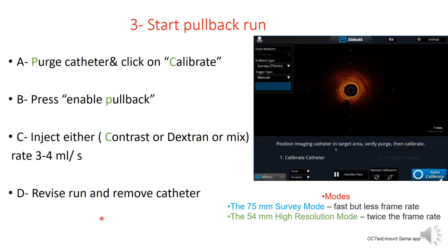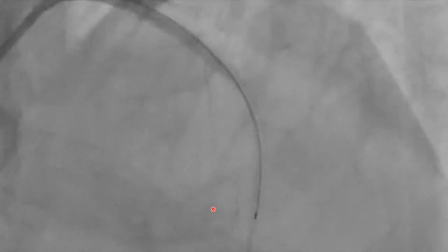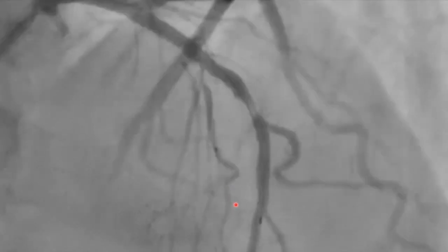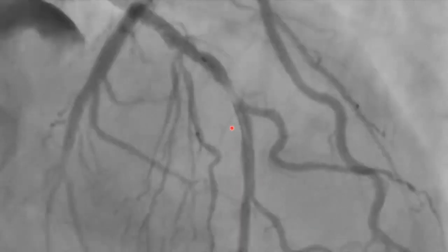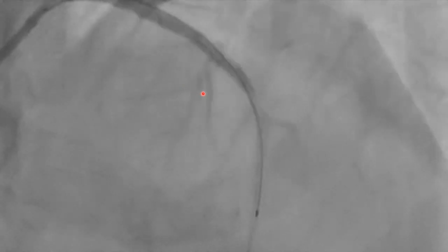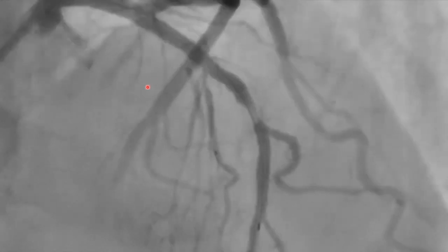Finally, revise your run before removing your catheter. Remember that everything you introduce into the coronary or the catheter is slightly thrombogenic, so don't forget to remove your catheter after making sure you have a good run. What happens is: we inject the dye, this is sensed by the drive motor unit, which starts moving the lens from the middle marker to the proximal marker across the area of interest.